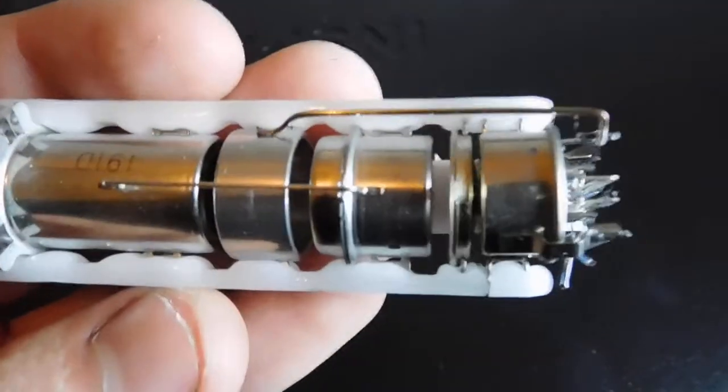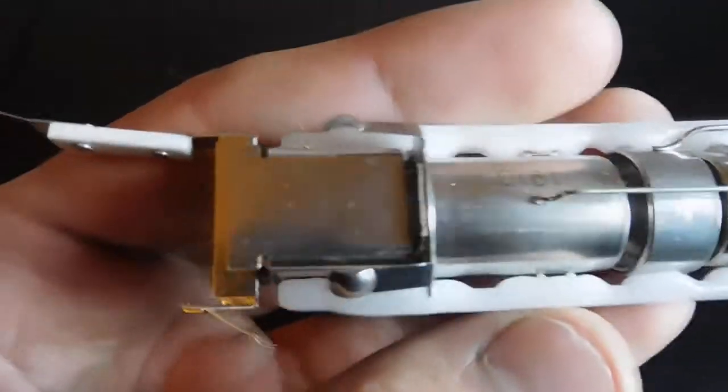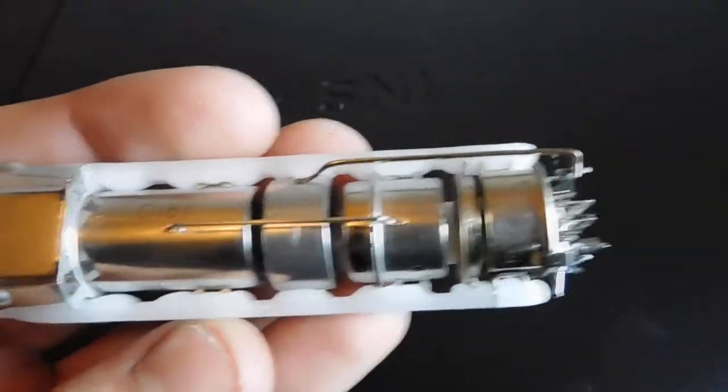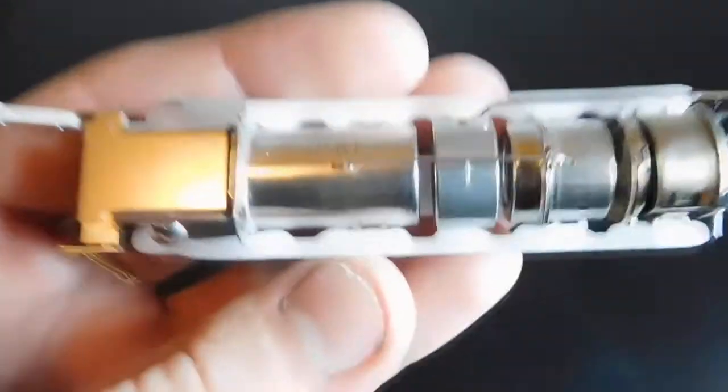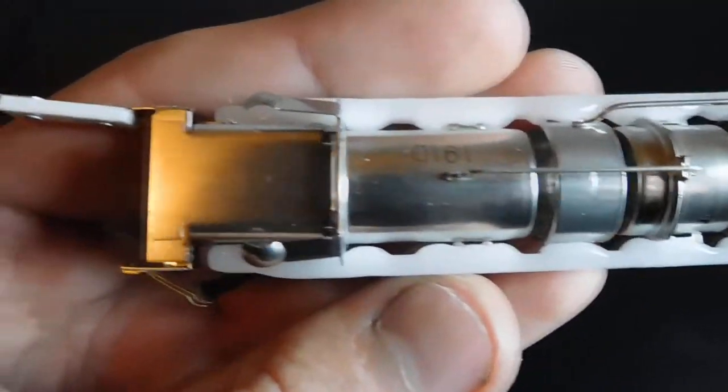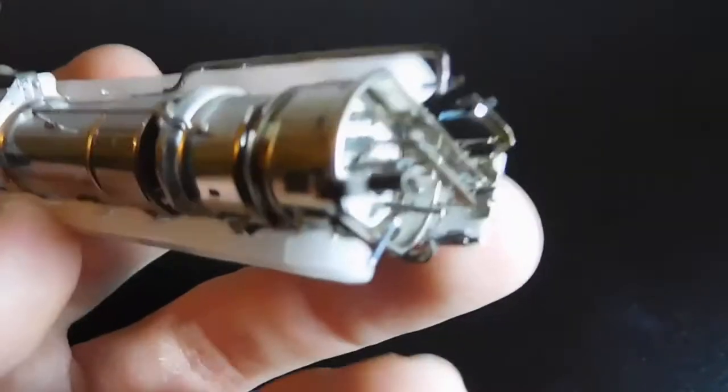But this is the gun assembly from the Sony Trinitron picture tube. I've removed the glass sleeve to expose it and I've got a nice bright fluro here to light it up so you can see it nice and clear.